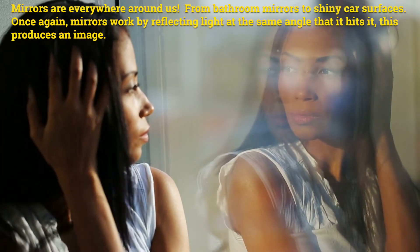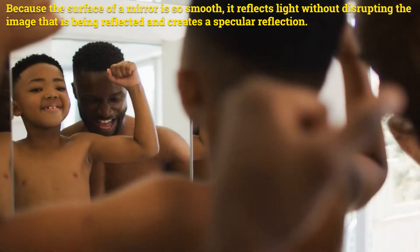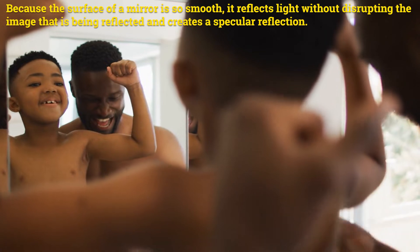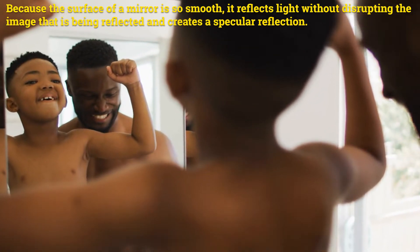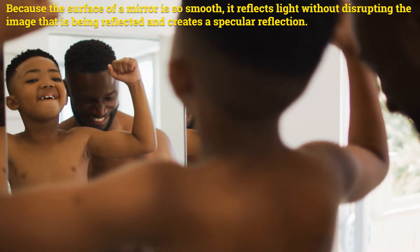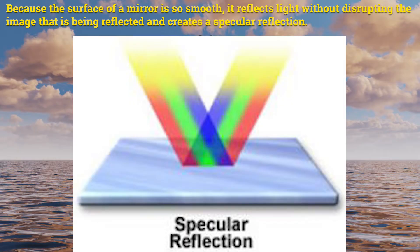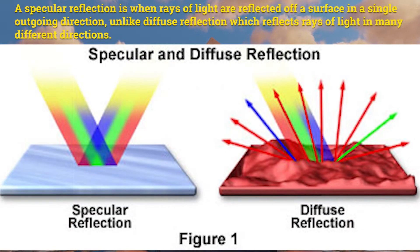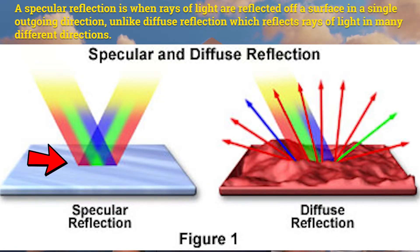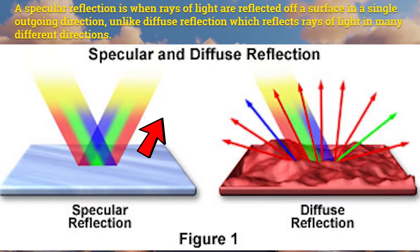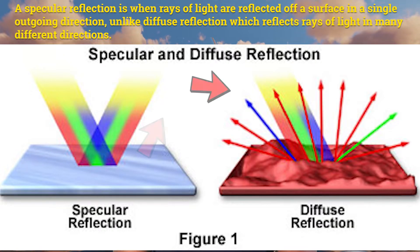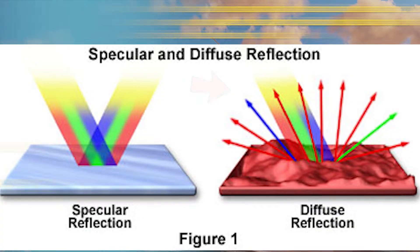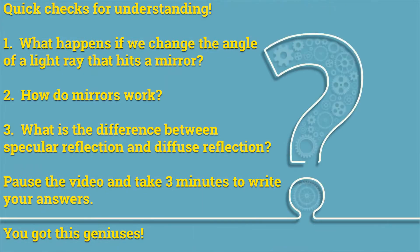This produces an image. Because the surface of a mirror is so smooth, it reflects light without disrupting the image that is being reflected, and creates a specular reflection. A specular reflection is when rays of light are reflected off a surface in a single outgoing direction, unlike diffuse reflection which reflects rays of light in many different directions.